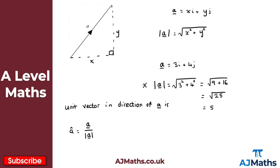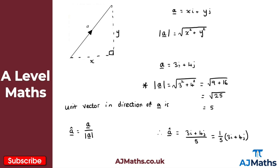For our example, â equals 3i plus 4j divided by the magnitude, which is 5. We can write that as one fifth of (3i plus 4j). In column vector form, that would be 3 fifths and 4 fifths. It's often easier to work with column vector form rather than the component form of i and j.